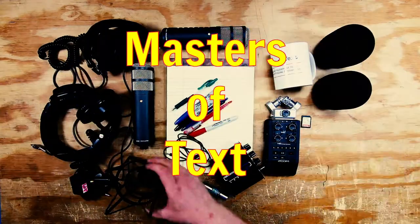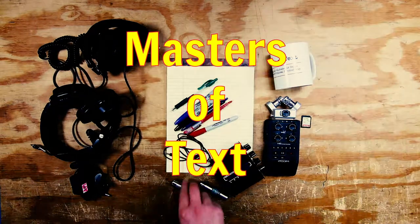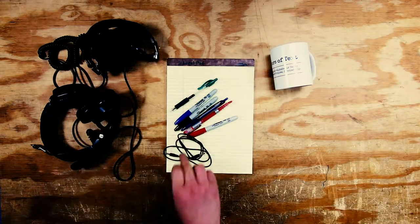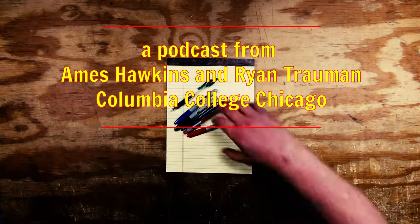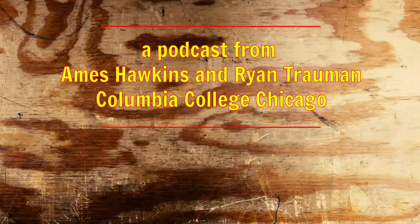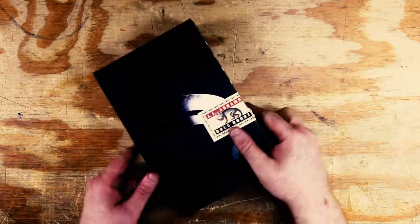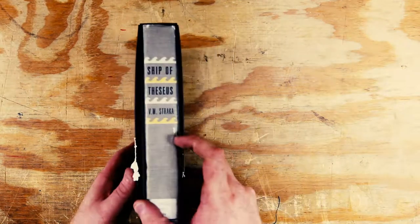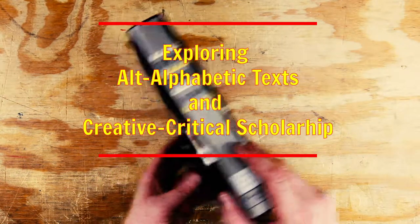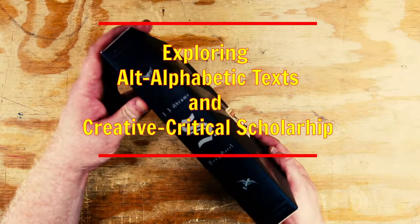What are we doing? I thought I knew what we were doing. Okay, first I think we need to introduce ourselves. Hi, I'm Ames Hawkins. Hello Ames Hawkins, I'm Ryan Truman. Wait, what's next? This is Masters of Text, exploring alt-alphabetic texts.